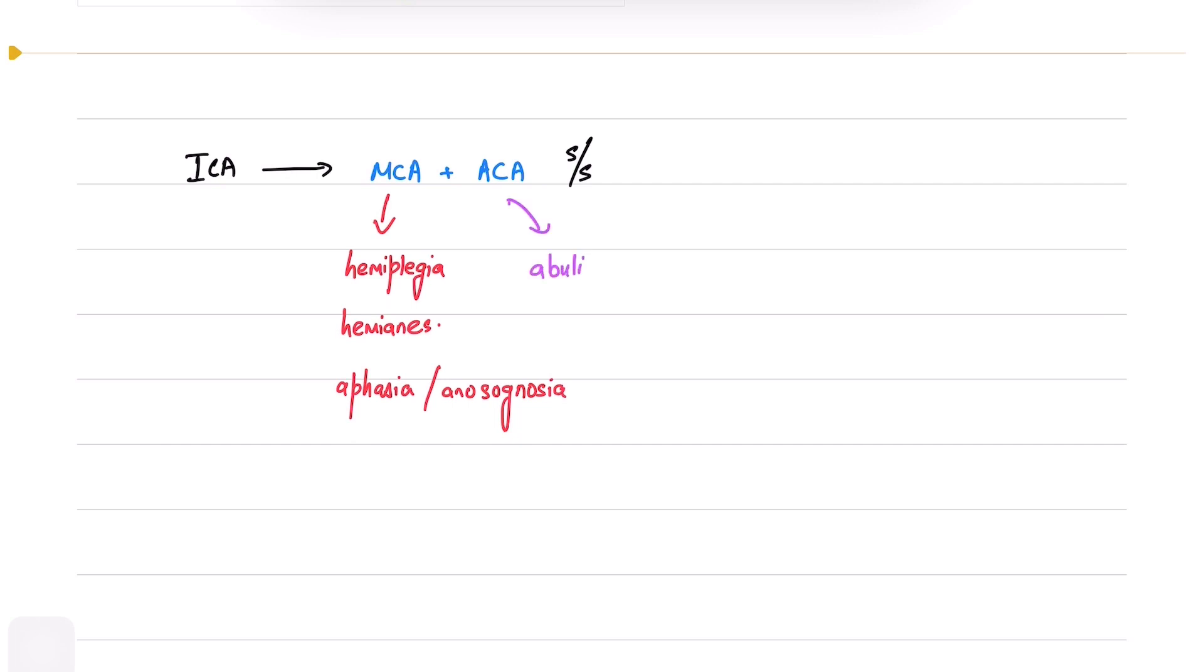The ICA also supplies the optic nerve via the ophthalmic artery. In 25% of cases, amaurosis fugax, which is recurrent transient monocular blindness, points towards occlusion of this artery. Patients will mention a horizontal shade which sweeps up or down the field of vision. A high-pitched carotid bruit fading into diastole is also associated with tightly stenotic lesions of the ICA.